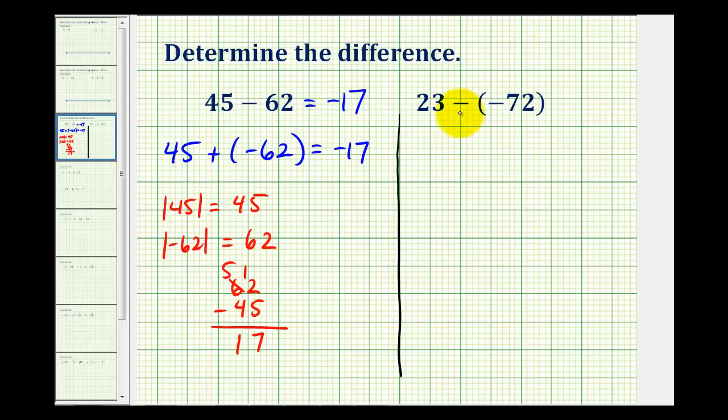So 23 minus negative 72 as an addition problem would be 23 plus positive 72. Subtracting negative 72 is the same as adding positive 72.